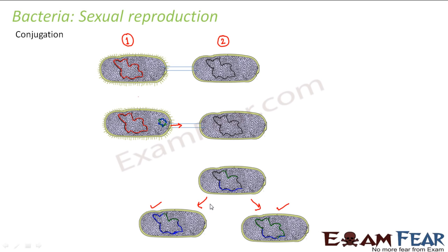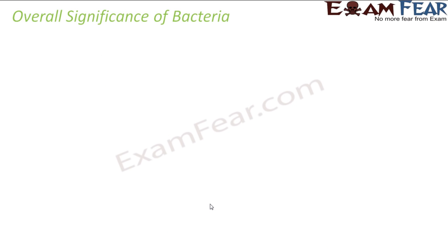In case of fission, the daughter organism was genetically identical to the parent. But in conjugation, the newborn bacteria have different genetic combination when compared to the parents. This is how reproduction happens in case of bacteria. What do you think is the overall significance of bacteria?